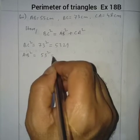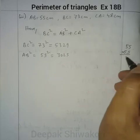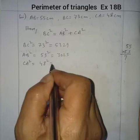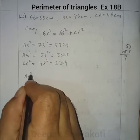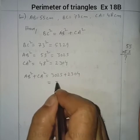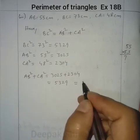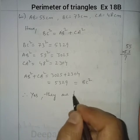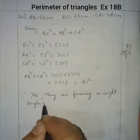AB² = 55² = 3025, and CA² = 48² = 2304. Now AB² + CA² = 3025 + 2304 = 5329, which equals BC². Therefore, yes, these three sides form a right-angled triangle.